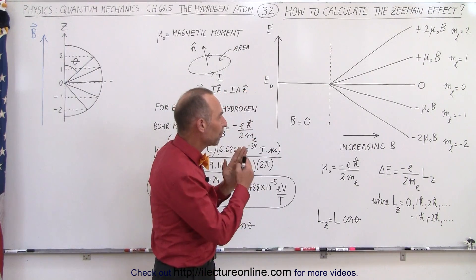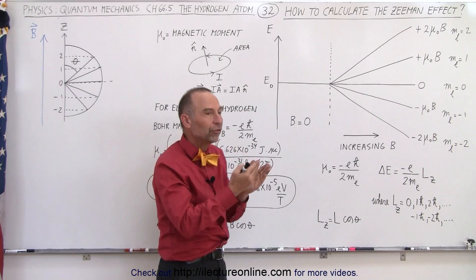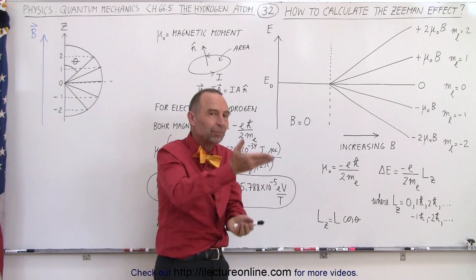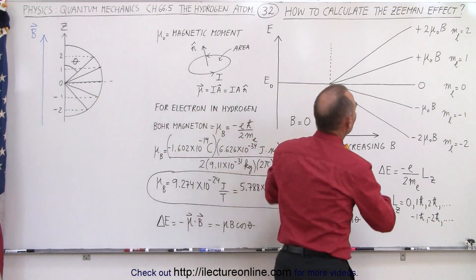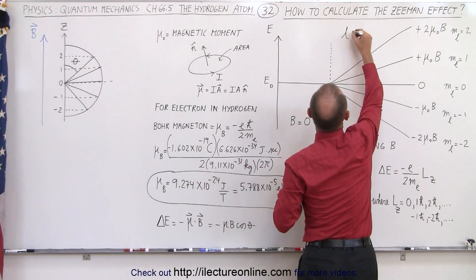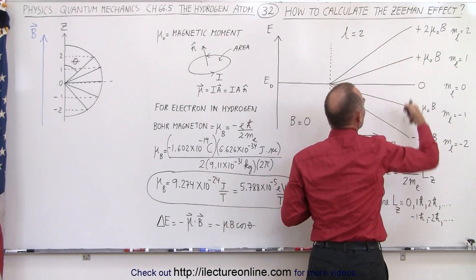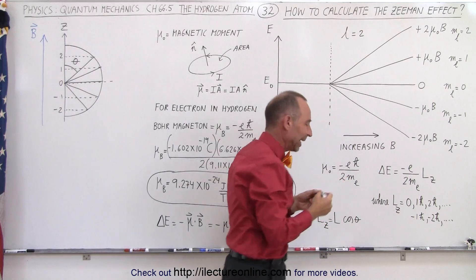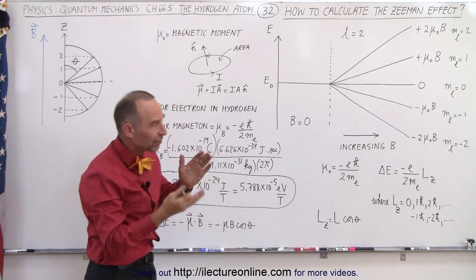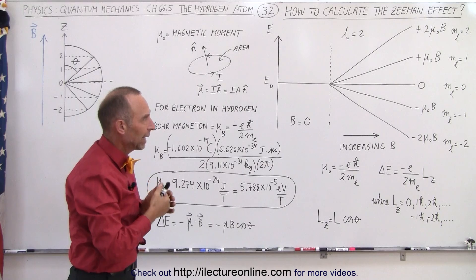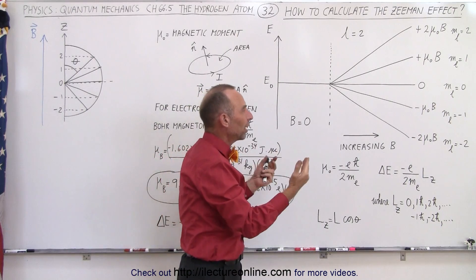When you apply a magnetic field, all of a sudden you can see there's going to be a split. In this case, we're going to assume that we have a value for L equals 2, which means there can be a total of 5 different energy levels, or 5 different splits caused by that Zeeman effect.